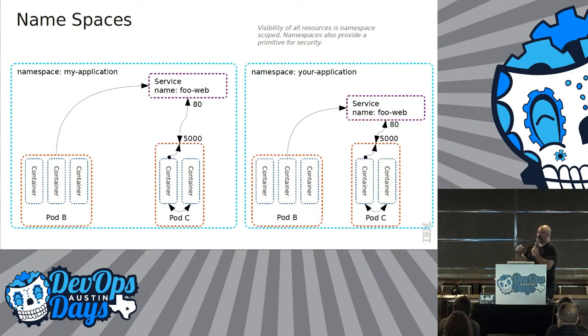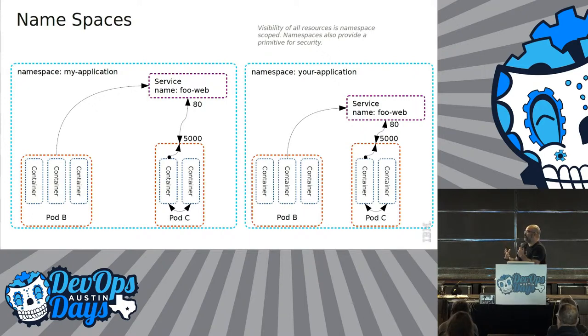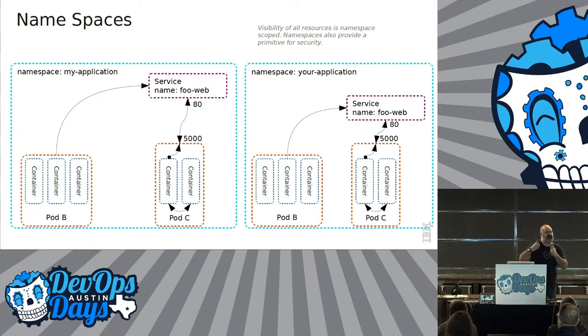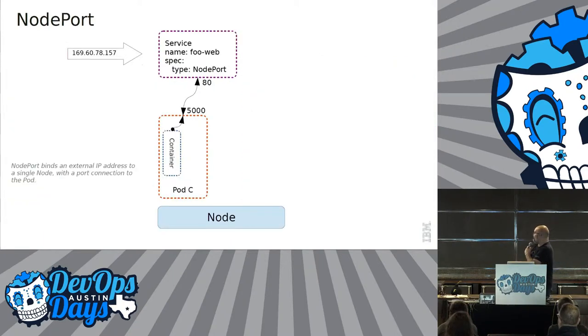Namespaces are also the next very important part. It's a way to cut up your Kubernetes environment into smaller bits, so you can have QA, dev, and prod if you need inside of it. Namespaces are really important.